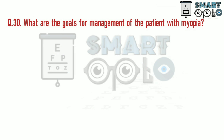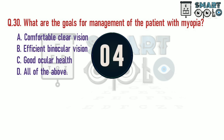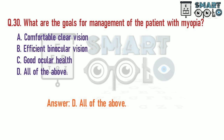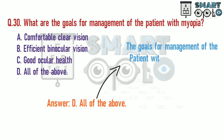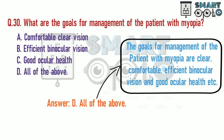Q30. What are the goals for management of the patient with myopia? A. Comfortable clear vision. B. Efficient binocular vision. C. Good ocular health. D. All of the above. The goals for management of the patient with myopia are to provide clear, comfortable, efficient binocular vision and good ocular health.